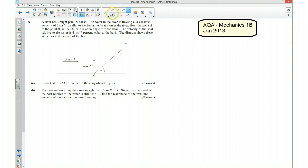This question is about resultant velocities. We've got a river that has straight parallel banks. The water in the river is flowing at a constant velocity of 3 meters per second parallel to the banks. A boat crosses the river from point A to point B so that its path is at an angle of alpha to the bank. The velocity of the boat relative to the water is 4 meters per second and is going perpendicular to the bank.